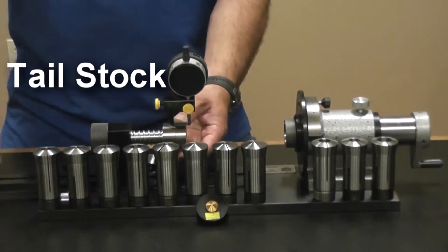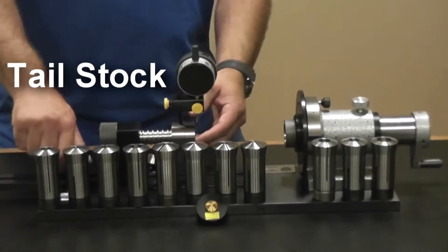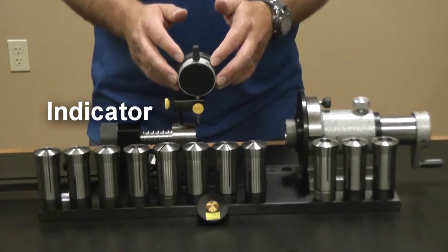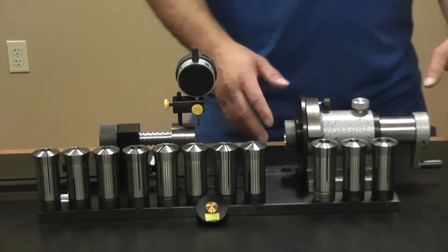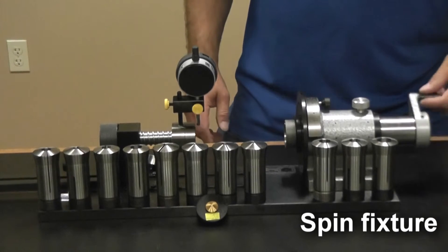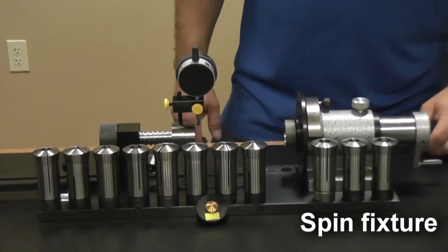We have a movable tail stock. It moves back and forth with an indicator with a TIR function. That's total indicator run out. We also have a spin fixture on the other end which allows us to rotate our fastener 360 degrees.